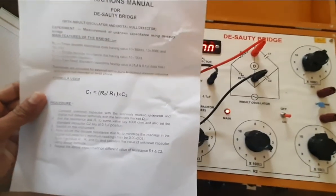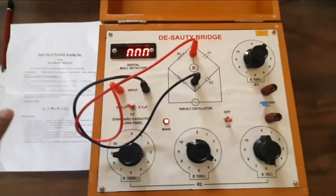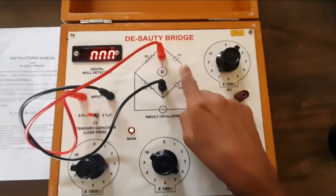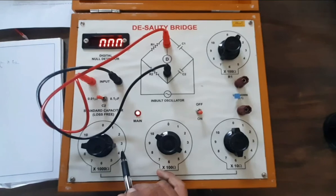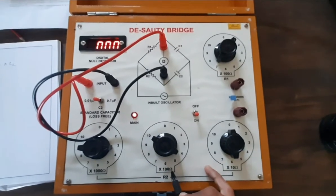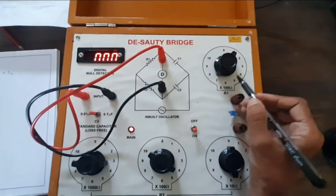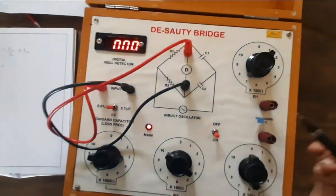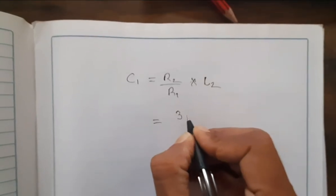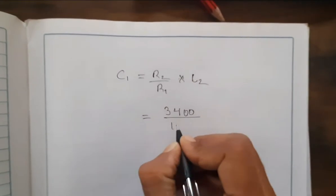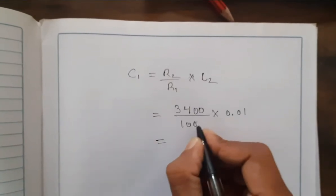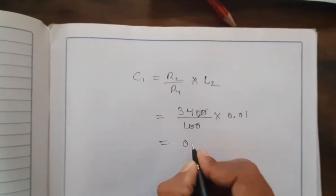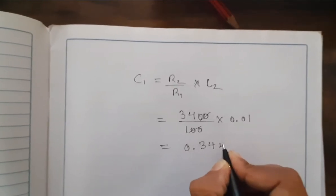You can see the formula: C1 = R2 / R1 × C2. Let us do the calculation to find the unknown capacitance C1. R2 is 3000 + 400 = 3400 ohm, and R1 is 100 ohm. Substituting: C1 = (3400 / 100) × 0.01 microfarad. This gives us 0.34 microfarad.